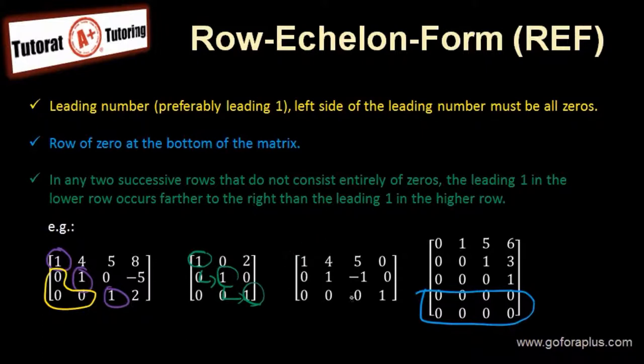Now the third example here, we see that even though it doesn't have to be going all the way down as a diagonal, the leading one just has to have all zeros on the left side, and then the leading one is farther right from the previous row.